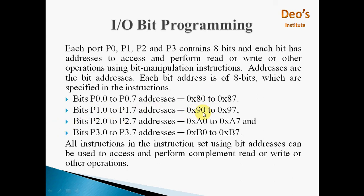Similarly, P1 port has address from 90 hex to 97 hex. If you want to read data from P1 port, it will be available at 90 hex to 97 hex. And if you have to write data to P1 port, then you have to write it at 90 hex to 97 hex. Similarly, P2 has address from A0 to A7 and P3 port 3 has address from B0 to B7. These all work as per the bits, so you have to transfer data bit by bit. All instructions in the instruction set using bit addresses can be used to access and perform the complement, read, write or other operations which are bit operations we can perform on these ports by using these bit addresses.